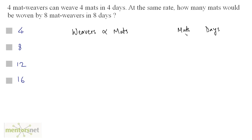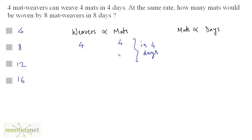If you increase the number of mats, the number of days required will also increase — so mats is also directly proportional to the number of days. It is given that 4 mat weavers can weave 4 mats in 4 days. So the number of weavers is 4 and the mats produced is 4, and this is in 4 days. We've been asked how many mats would be woven by 8 mat weavers in 8 days.